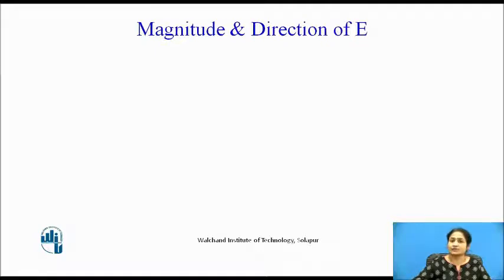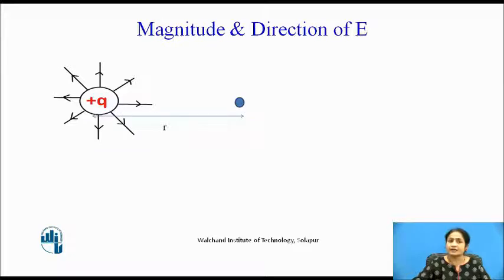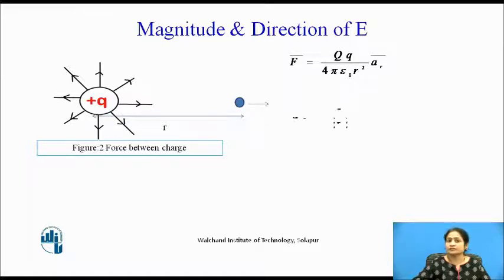Now let us find the magnitude and direction of E. Consider a positive charge Q placed; the direction of the electric field for a positive charge is outward. If Q is negative, then the direction of the field will be towards the charge — inward. If we consider one more charge at some distance R from this positive Q, this charge will experience a force, and the direction of that force will be the same as that of the field. The force is given by Q upon 4 pi epsilon R square multiplied by the unit vector A_R, where A_R is the vector R divided by its magnitude.